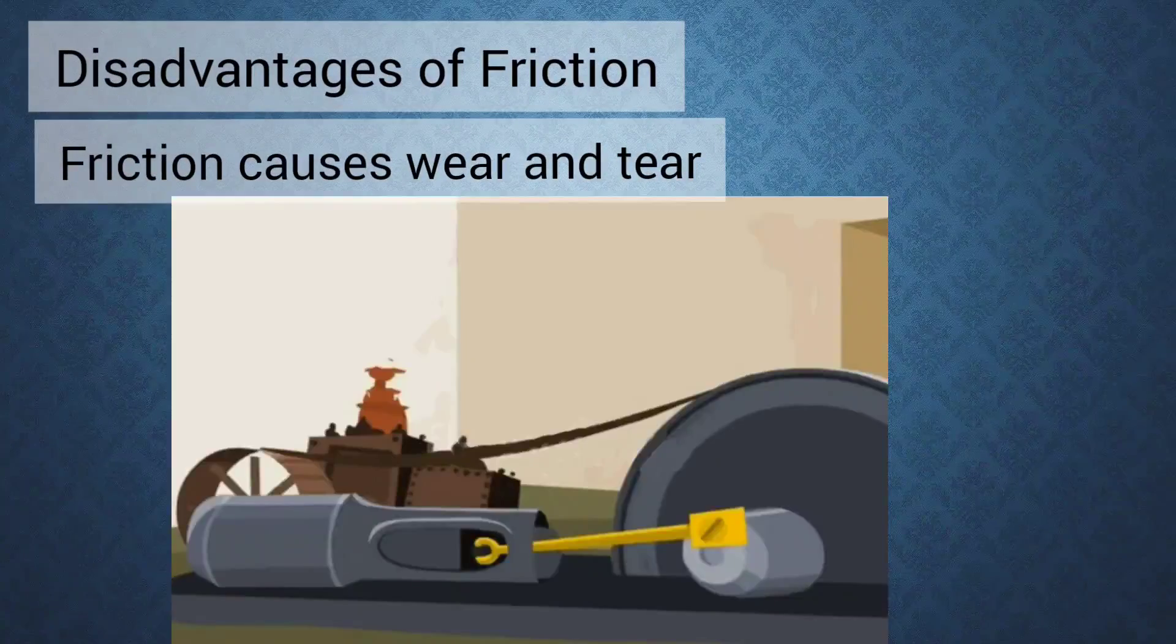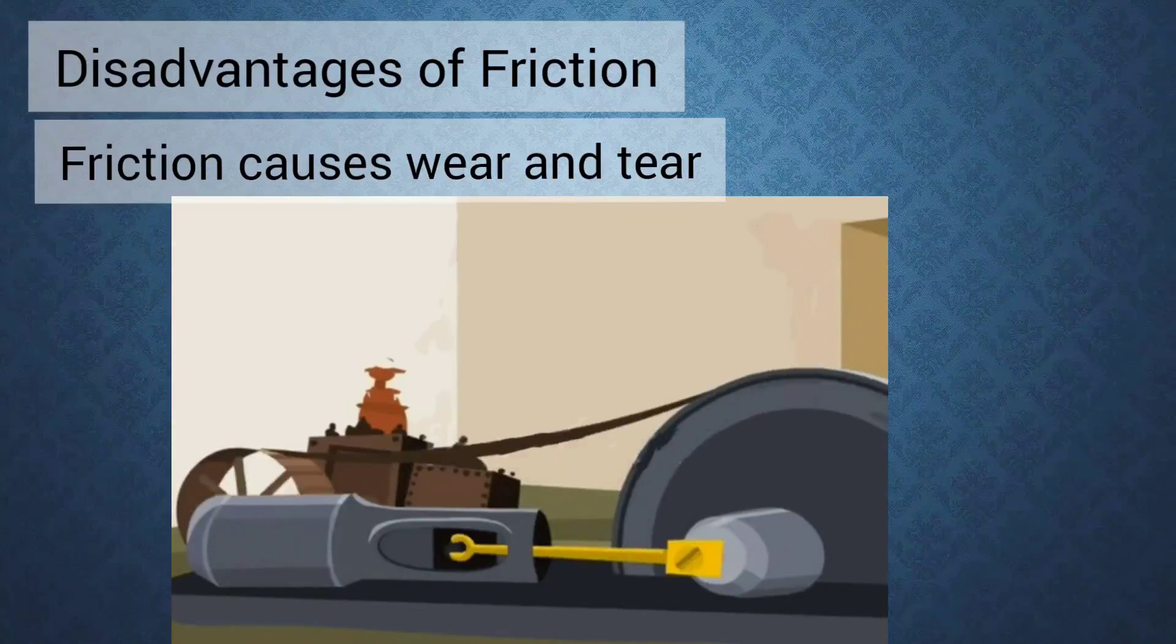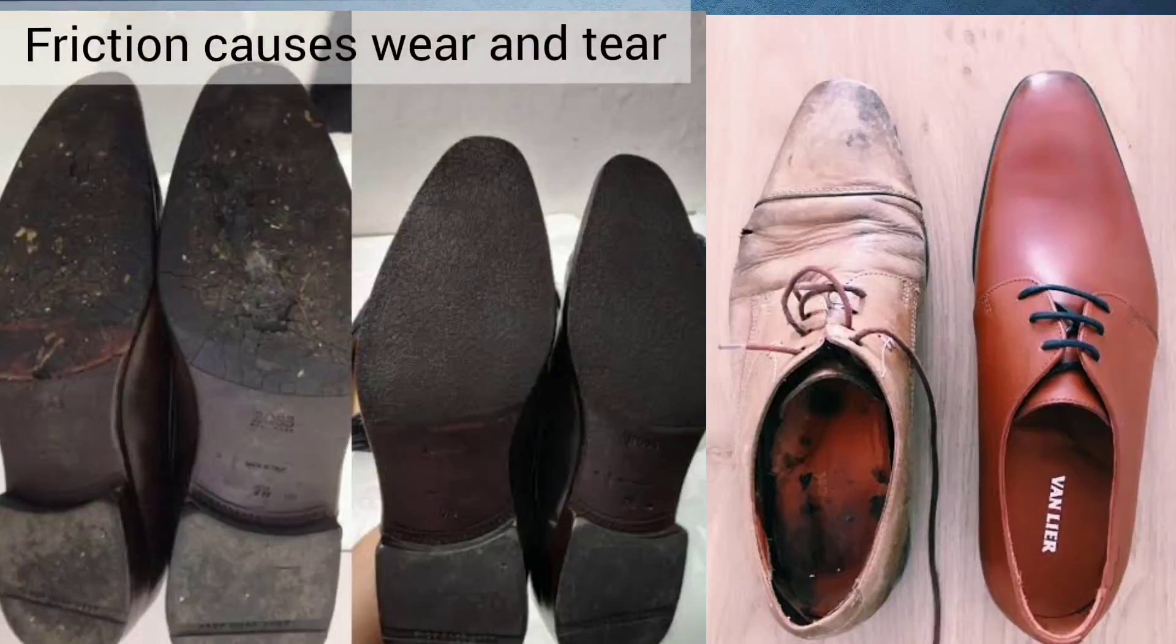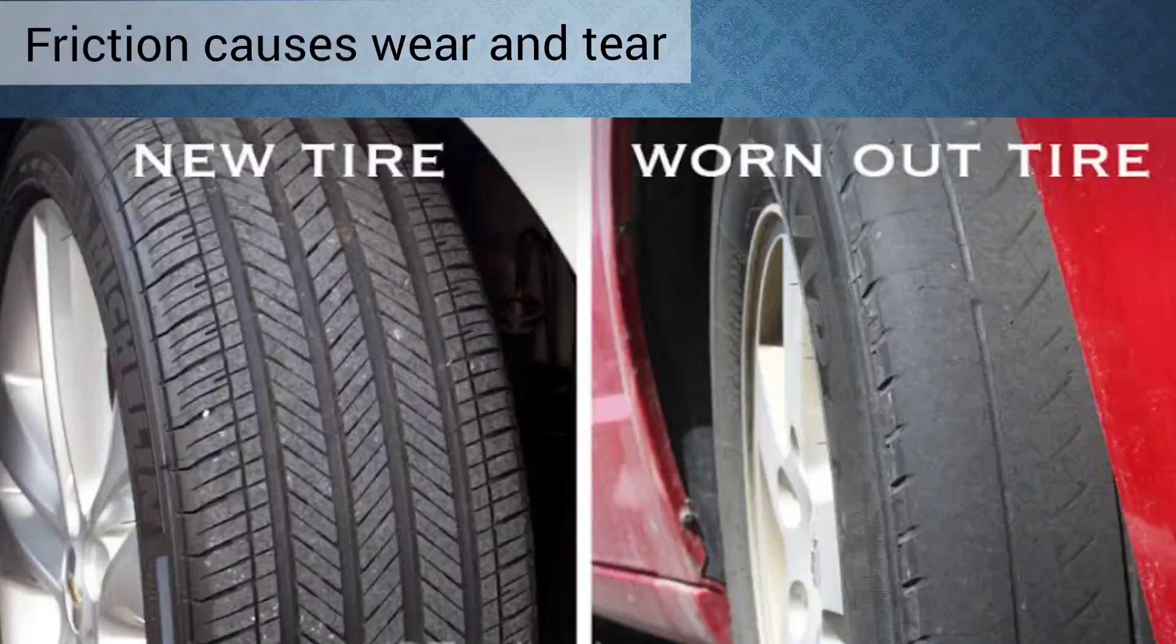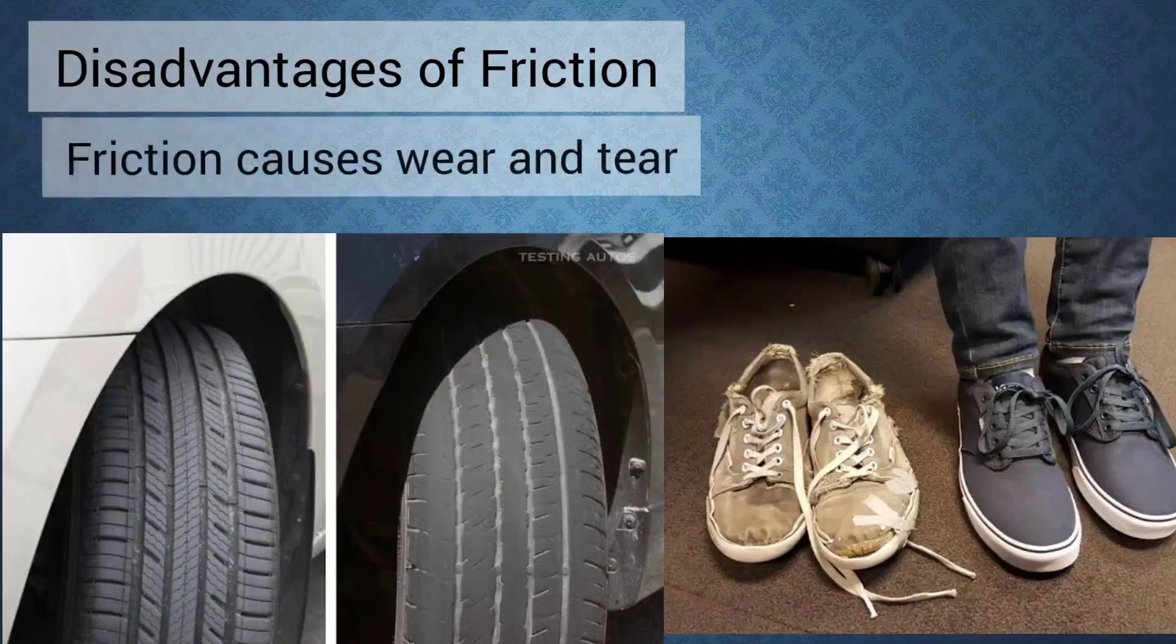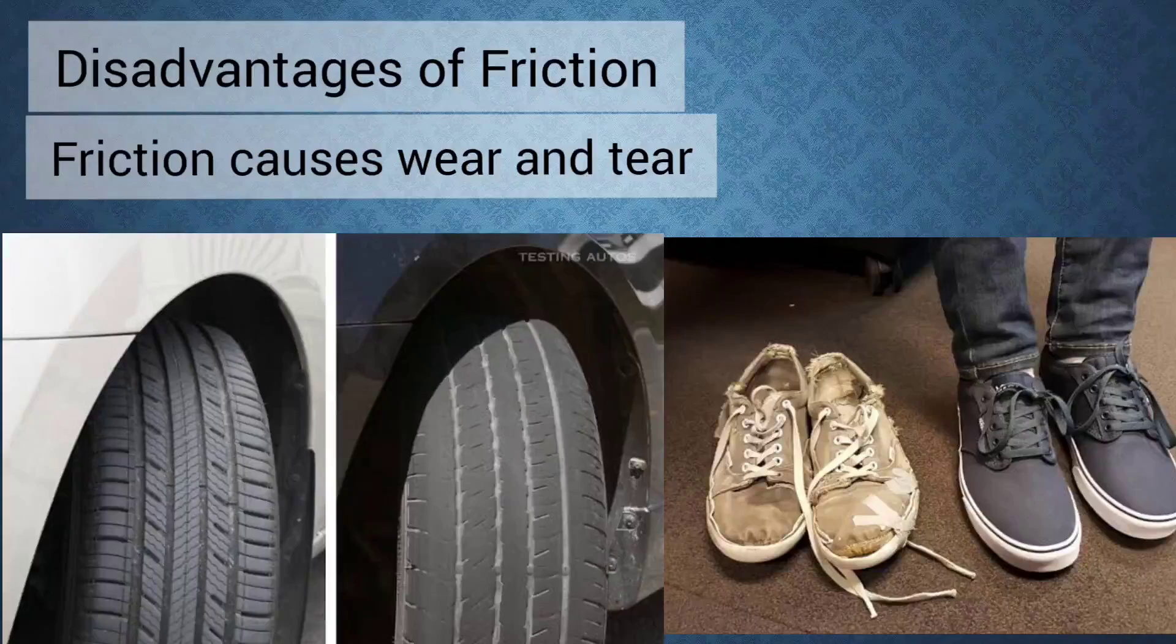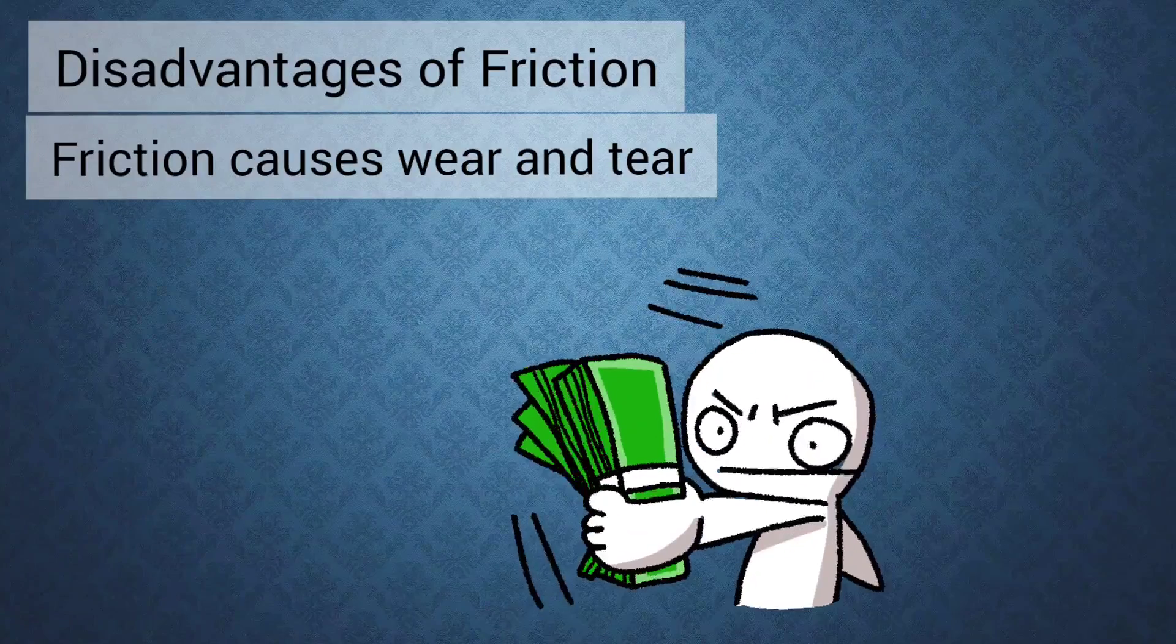Friction causes wear and tear of the parts of the machines in contact. Thus the lifetime of machine is reduced. Soles of our shoes and tires of automobiles wear out with gradual use. Therefore the worn out pieces have to be replaced from time to time. This causes wastage of money.